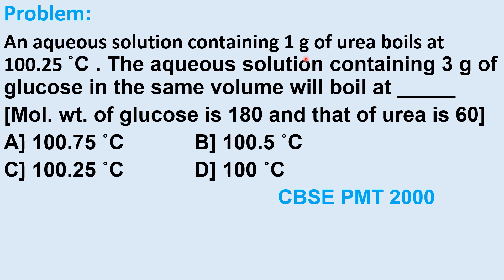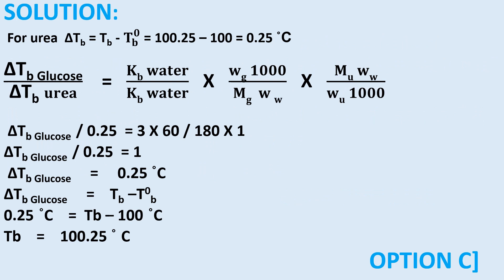An aqueous solution containing 1 gram of urea boils at 100.25°C. An aqueous solution containing 3 gram of glucose in the same volume — at what temperature will it boil? Molecular weight of glucose is 180 and urea is 60. For urea, delta Tb = 100.25 − 100 = 0.25°C.